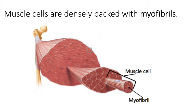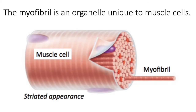Something even smaller that's also cylindrical shaped is present inside of a muscle cell, and that's called a myofibril. Inside of every muscle cell are myofibrils aligned along the cell like long straws. In fact, about 80 percent of a muscle cell is filled with tightly packed myofibrils.